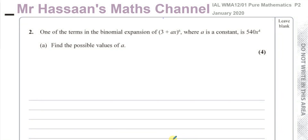Welcome to Mr. Hassan's Maths channel. In this video I'm going to go through question number two from the international A-level pure mathematics P2 Edexcel January 2020 paper. This is an international A-level, not to be confused with the UK A-level. The P2 is an AS level paper. One of the terms in the binomial expansion of (3 + ax)^6, where a is a constant, is 540x^4. Find the possible values of a.